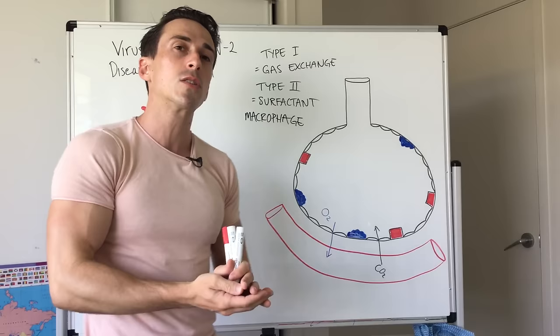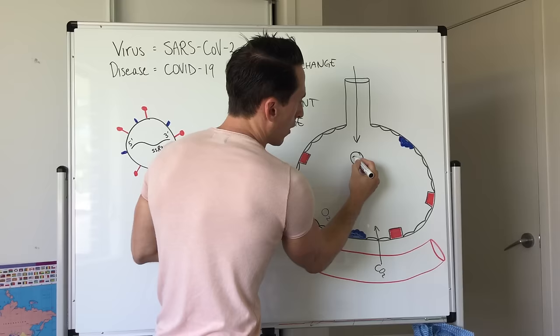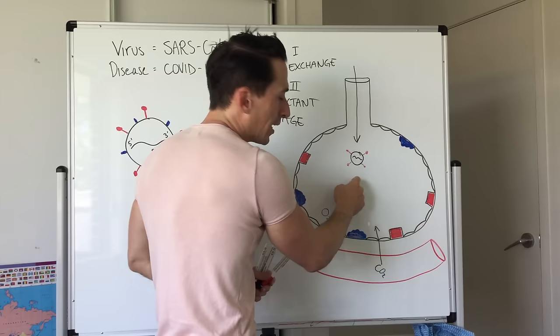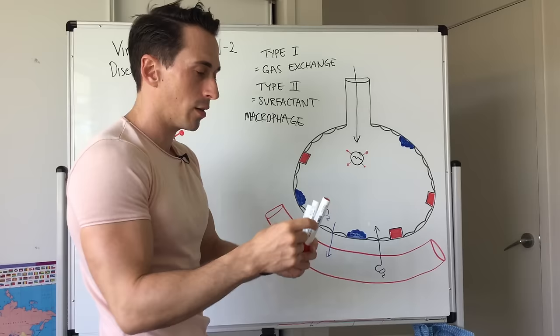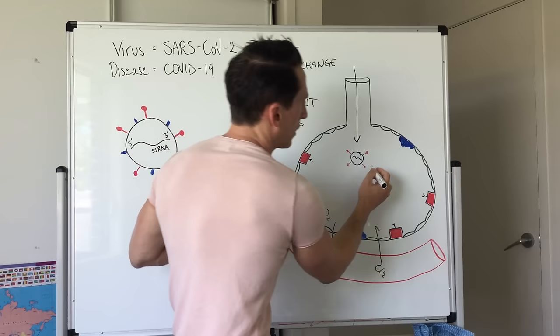Now with COVID-19, what can happen is this virus can come down and remember the virus has single-stranded RNA inside and it's got those S proteins on the outside. These S proteins, like I said, are the key. If it ends up getting down into the alveoli, these type 2 alveolar cells, the ones that produce surfactant, they actually have a protein on their surface. This protein is the lock.